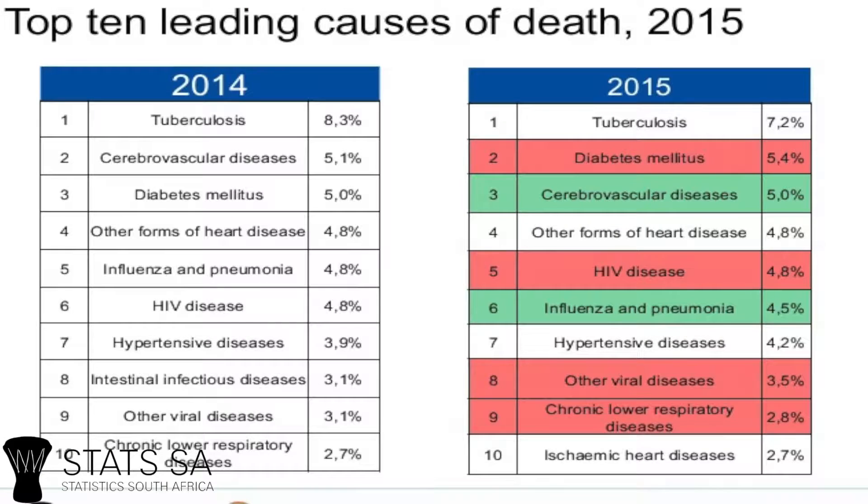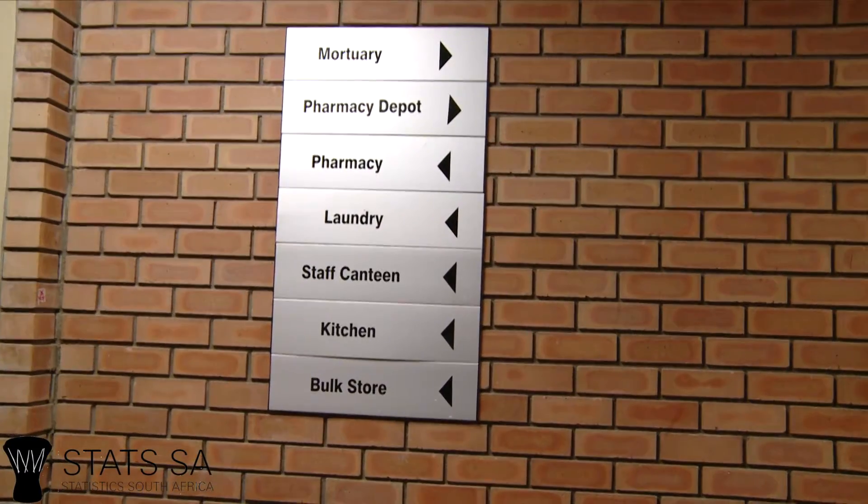We do know that tuberculosis is the number one killer in South Africa, taking up to 35,000 people per year — men and women. Diabetes is number one among women, but tuberculosis is number one among men. So that's the importance of this report. South Africans do know what kills them, and they have a long period of data over which they know what actually kills South Africans.